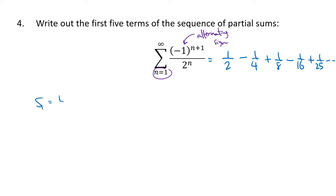Our first partial sum is going to just be that first term, 1/2. s₂ will be the sum of the first two terms, so the first term is 1/2, the second term is -1/4, and 1/2 minus 1/4 is 1/4. s₃ will be 1/2 minus 1/4 plus 1/8, that works out to be 3/8. Find a common denominator, simplify that down.